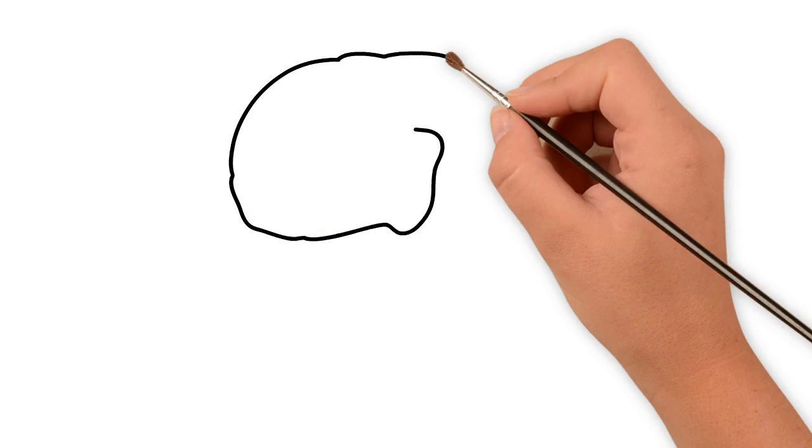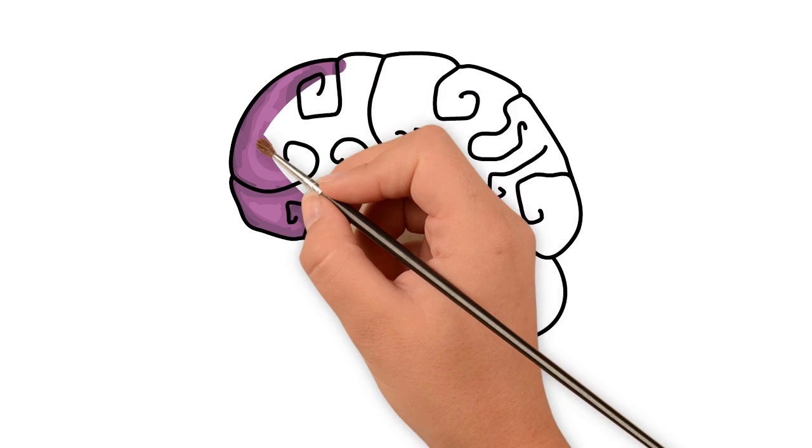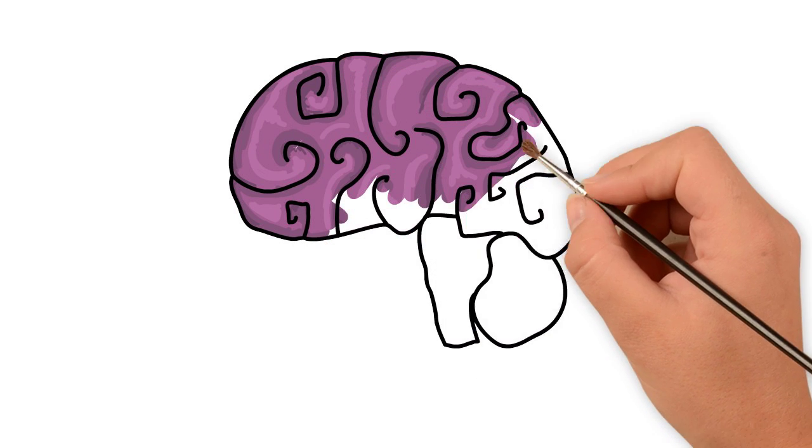The theory is that exercise releases feel-good chemicals in the brain such as endorphins.